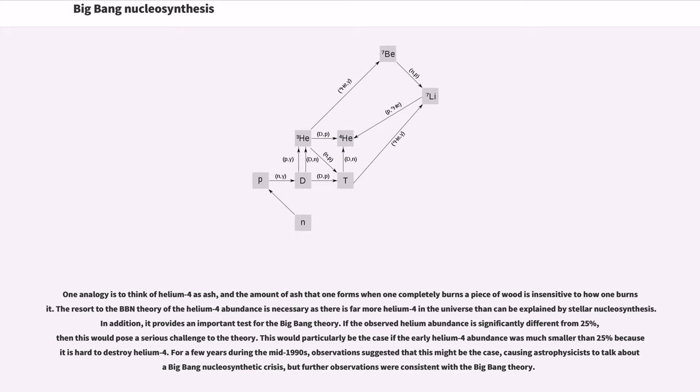The resort to the BBN theory of the helium-4 abundance is necessary as there is far more helium-4 in the universe than can be explained by stellar nucleosynthesis. In addition, it provides an important test for the Big Bang theory. If the observed helium abundance is significantly different from 25%, then this would pose a serious challenge to the theory. This would particularly be the case if the early helium-4 abundance was much smaller than 25%, because it is hard to destroy helium-4. For a few years during the mid-1990s, observations suggested that this might be the case, causing astrophysicists to talk about a Big Bang nucleosynthetic crisis, but further observations were consistent with the Big Bang theory.